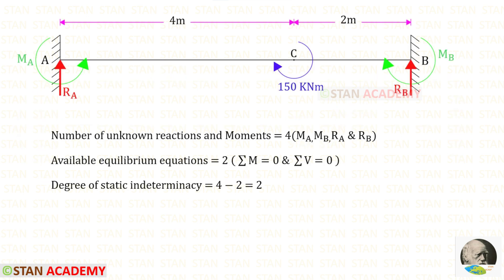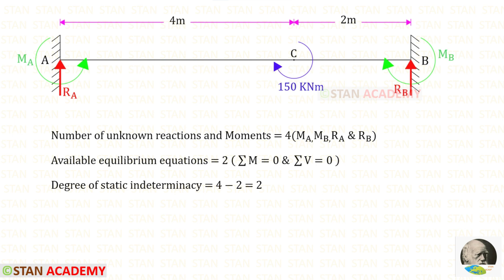Now let us find the degree of static indeterminacy. In this beam, the number of unknown reactions and moments are 4. The available equilibrium equations are 2. The degree of static indeterminacy will be 4 minus 2, so it will be 2.